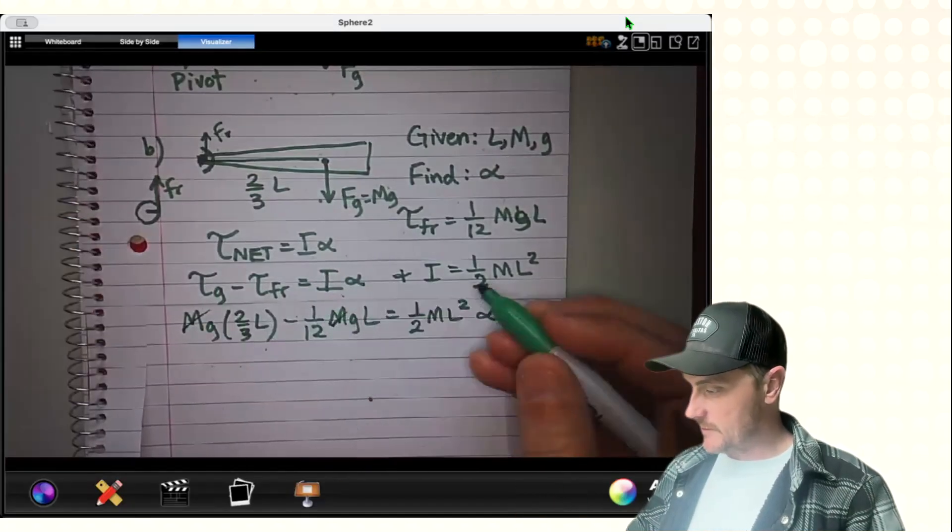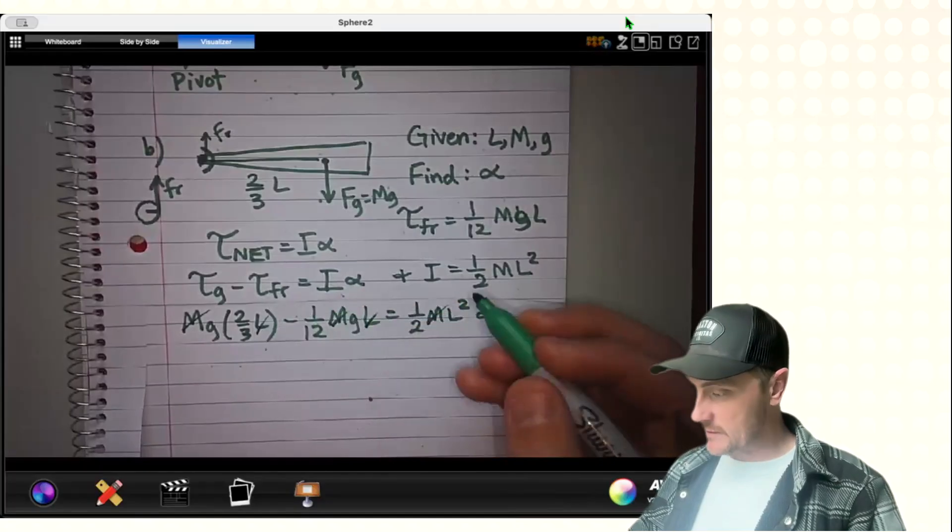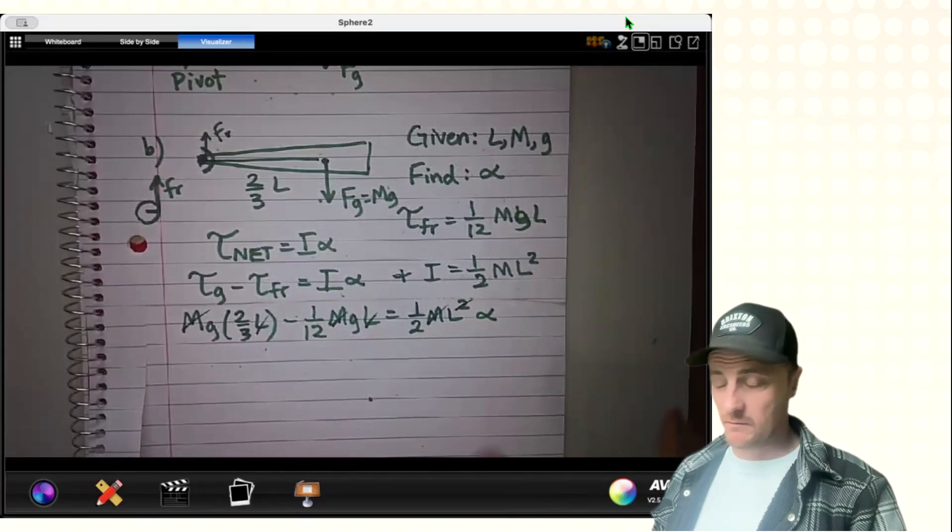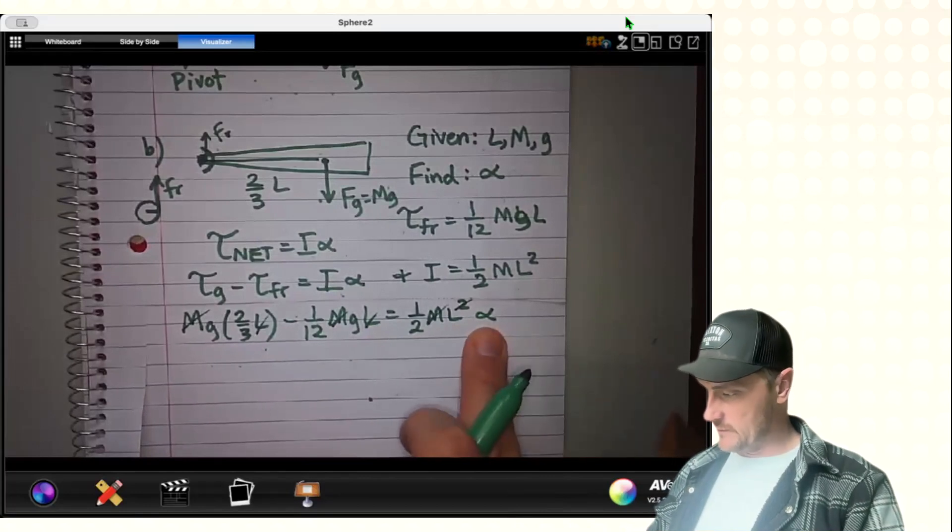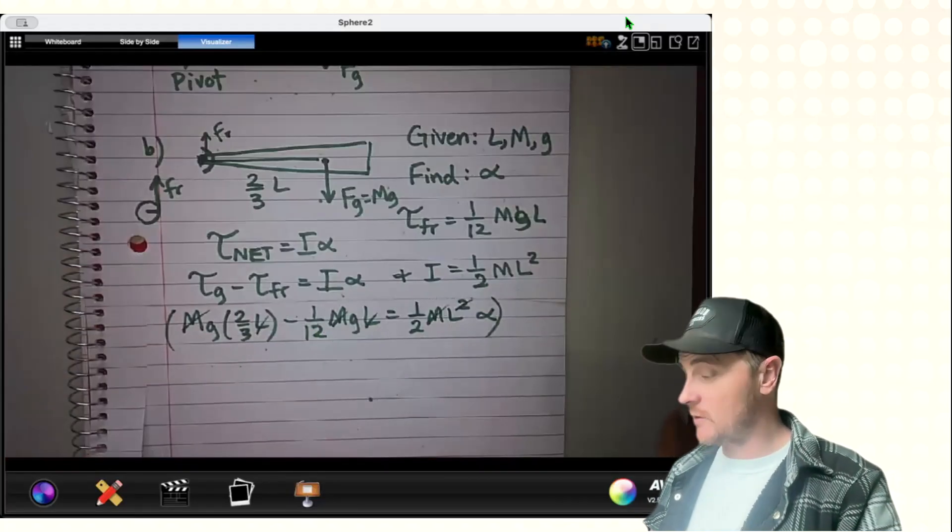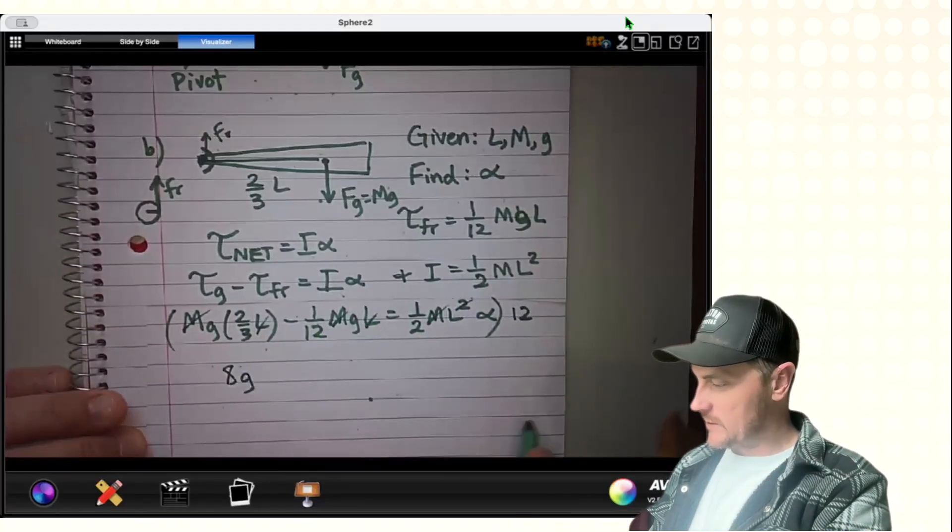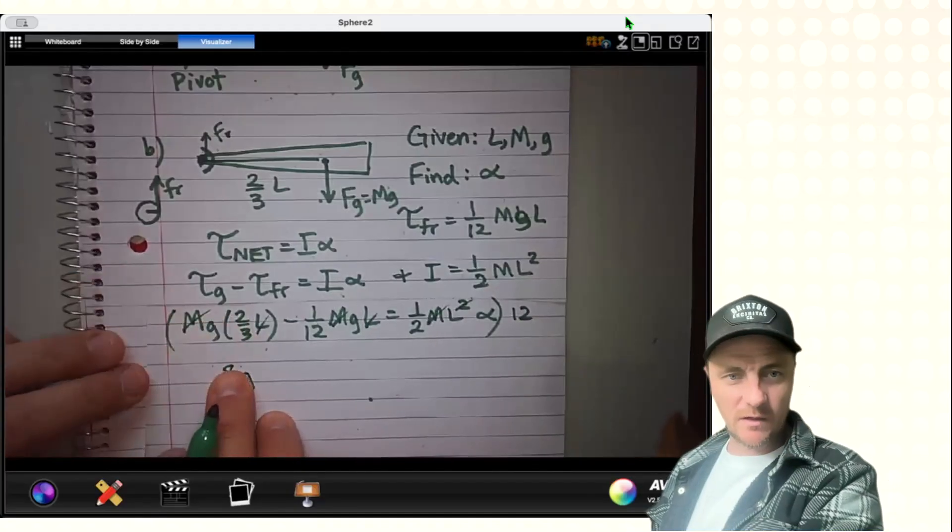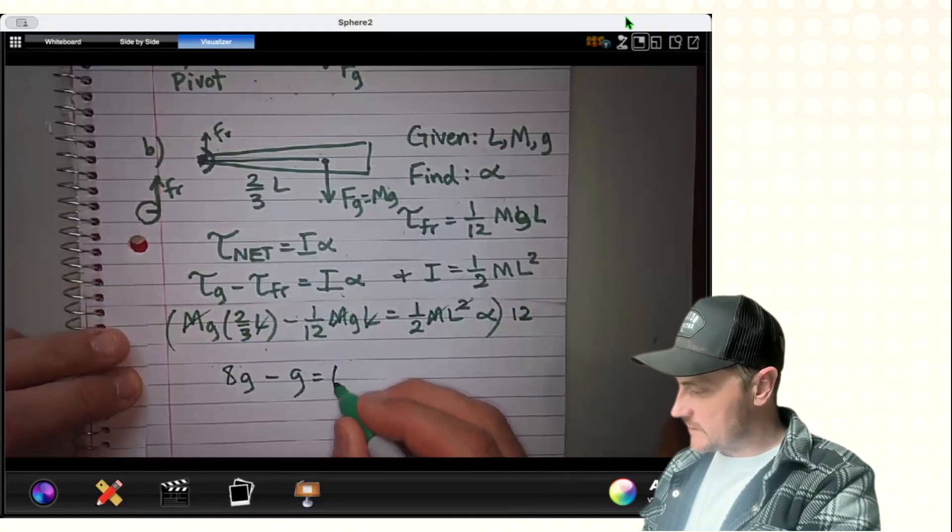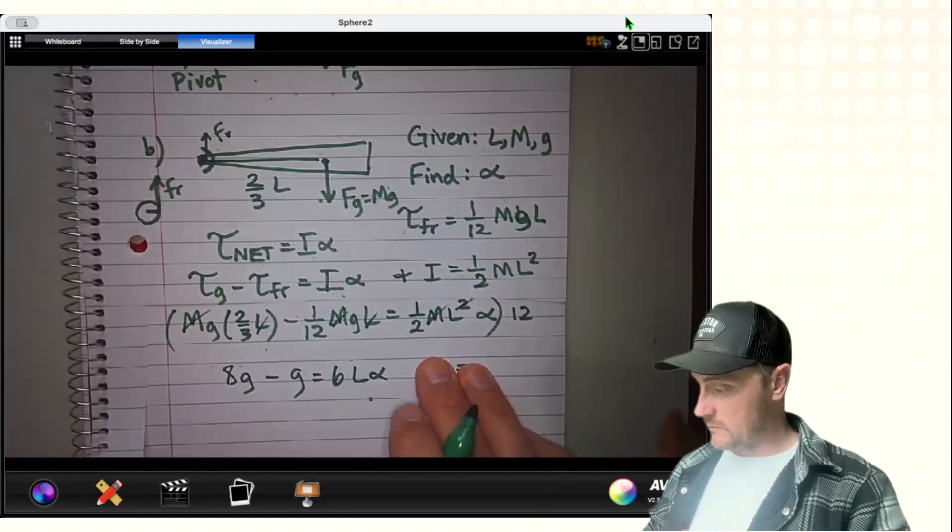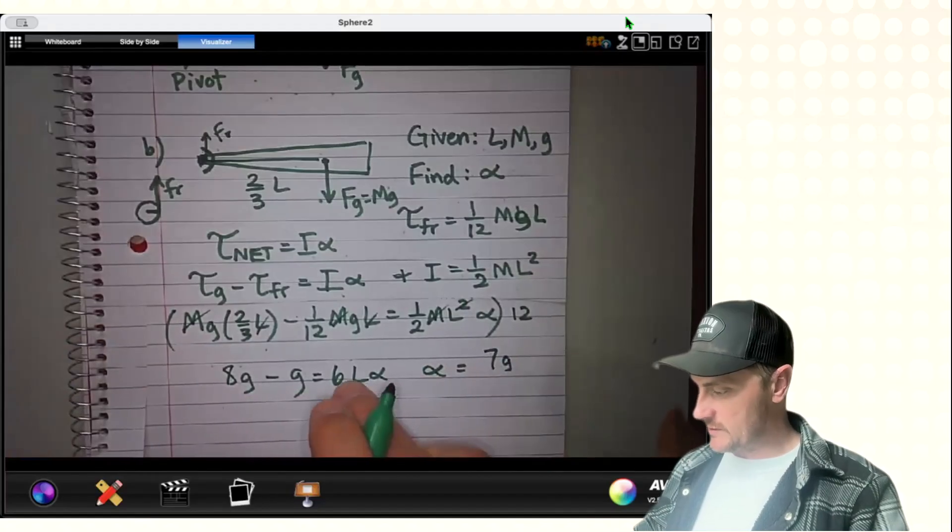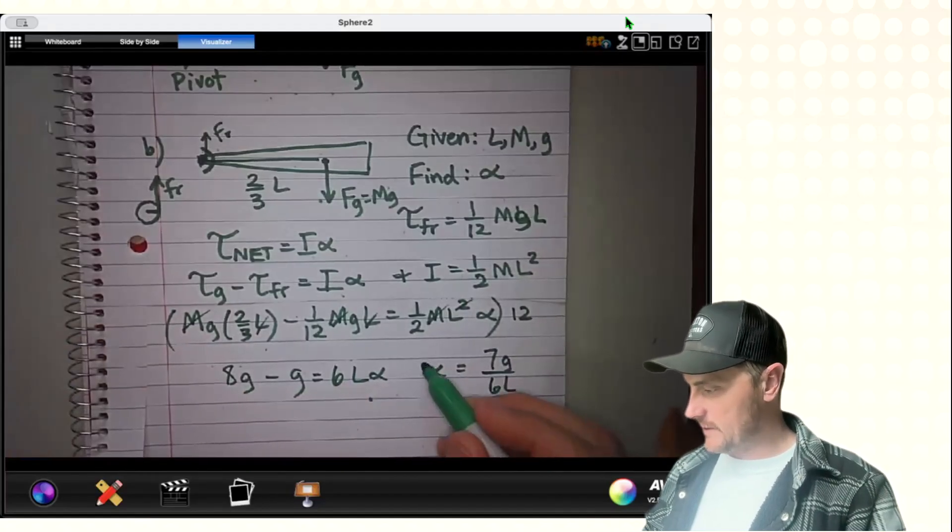M is in every single term. I'm going to cross it out. There is an L in every single term, but keep in mind, these two get crossed out, and only one of these gets crossed out. And what else can I do? Well, I'm solving for alpha, and I've got all these fractions. Personally, I like to multiply every fraction by the lowest common factor, which is 12 in this case. So if I multiply this one by 12, I get 8g. I'm going to put the g behind the constant, minus g equals 6L alpha. Cool. We're going to solve for alpha, but first we're going to subtract these two, which would give us 7g, and we're going to divide by the 6L, and there it is.